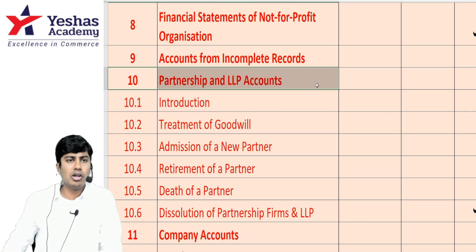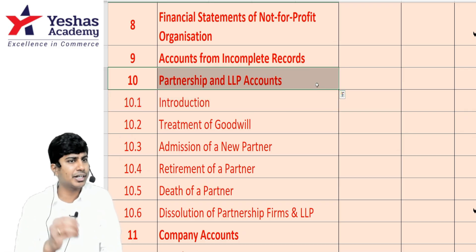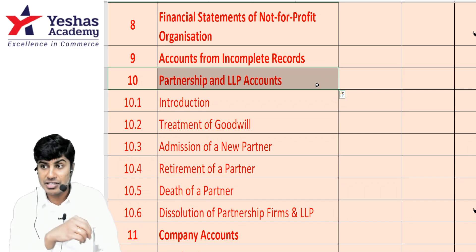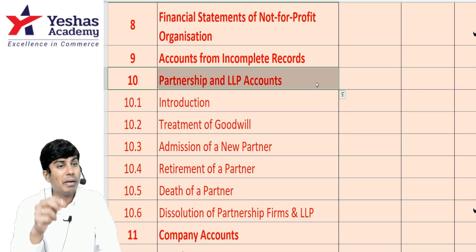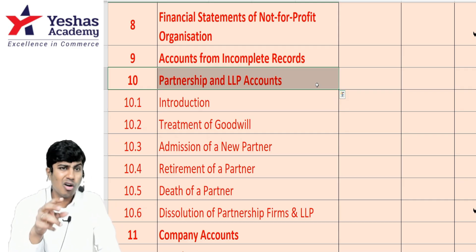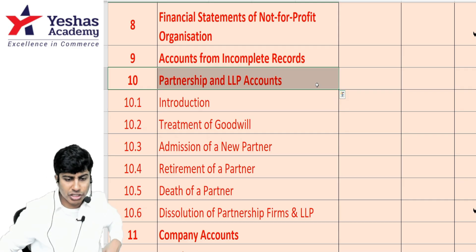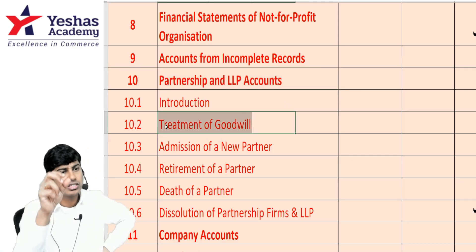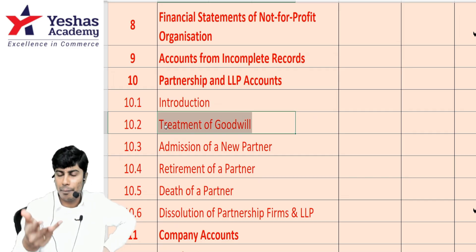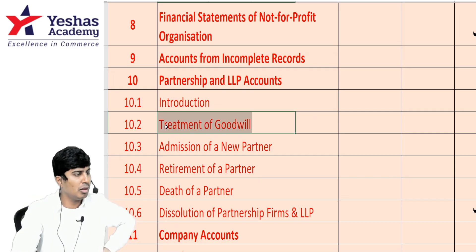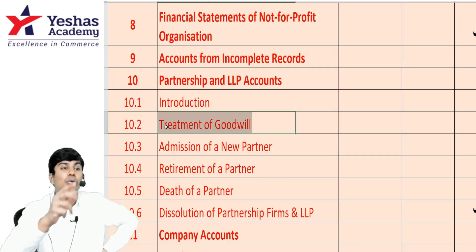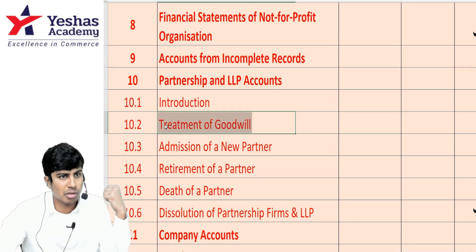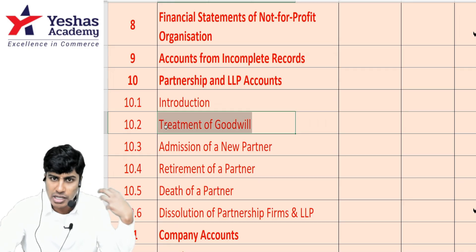For partnership, don't leave out the smallest parts like interest on drawings, interest on capital, fixed capital system, fluctuating capital system, and adjusting for a partner with a minimum guarantee. For goodwill, there are multiple methods: simple average, weighted average, super profit, capitalization, and annuity. Remember not to compute new ratios for goodwill directly — adjust it using the table method as demonstrated in class.